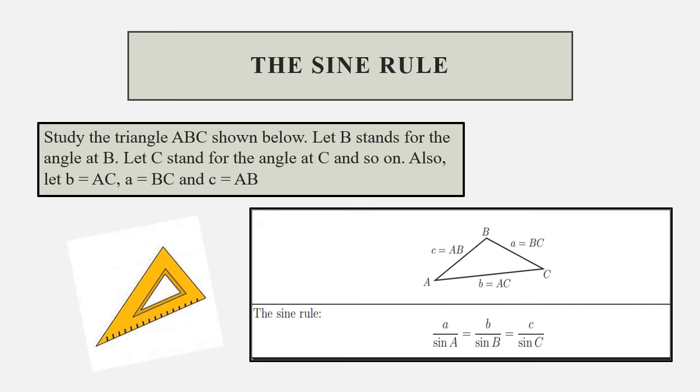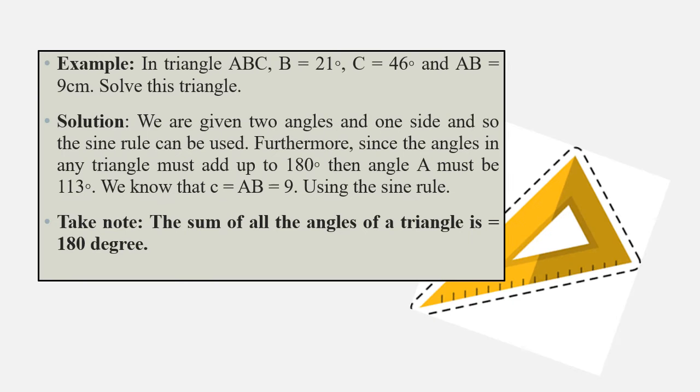Example: In triangle ABC, angle B = 21°, angle C = 40°, and AB = 9 cm. Solve this triangle. For our solution, we are given two angles and one side, so the sine rule can be used. Furthermore, since the angles in any triangle must add up to 180°, then angle A must be 113°.